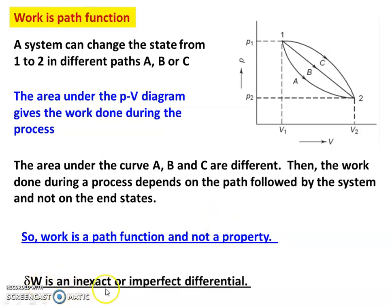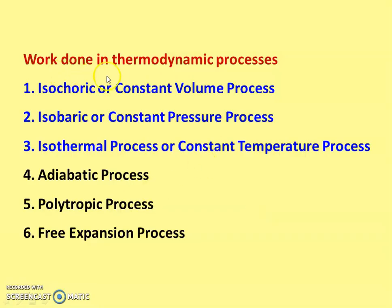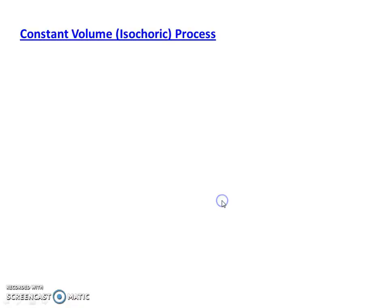And δW is an inexact or imperfect differential. Now we are going to calculate work done for thermodynamic processes. In this lecture, we take the first three processes: isochoric or constant volume process, isobaric or constant pressure process, and isothermal or constant temperature process. We take them one by one.